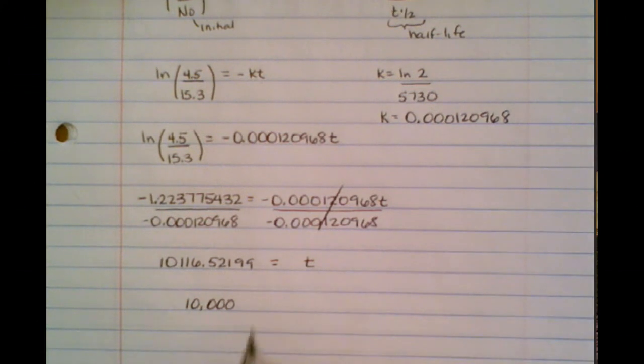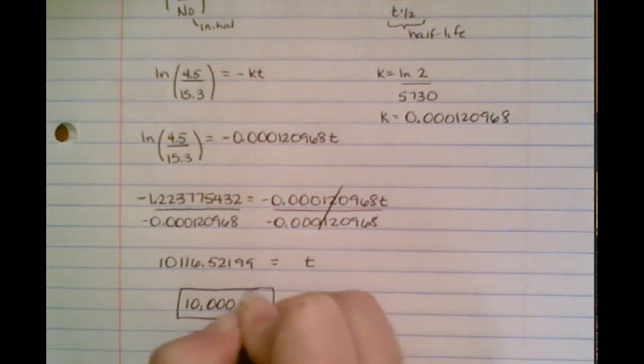Now, I'm not really worried about significant figures in this one, so this is about 10,000. And what are our units? Well, originally it said that the half-life was in years, so our answer is in years. So this would be our final answer.